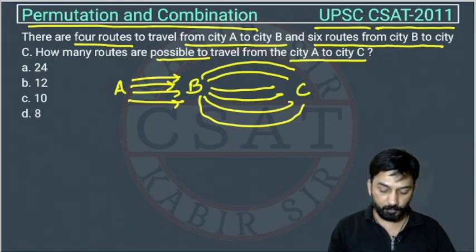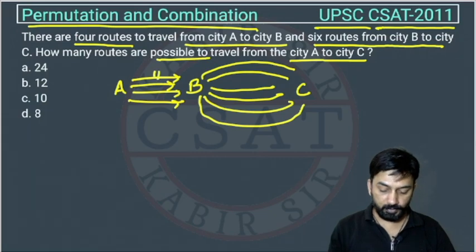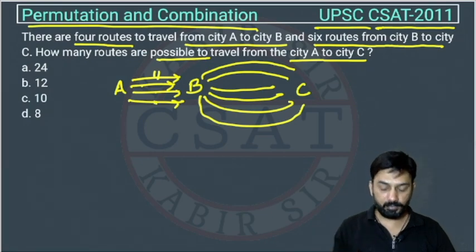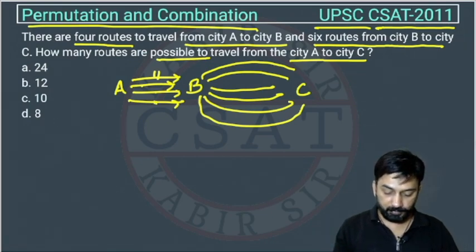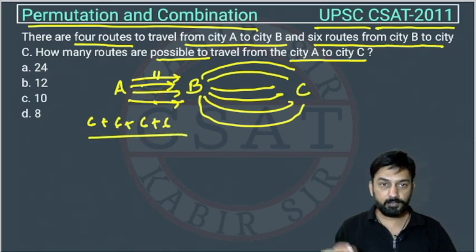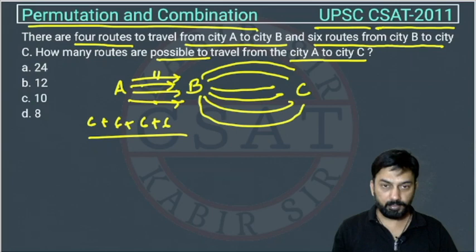Suppose a person selects one route and reaches city B. After reaching B, he has six possibilities. Similarly, each of the other routes also has six possibilities. So this will be like 6 plus 6 plus 6 plus 6.